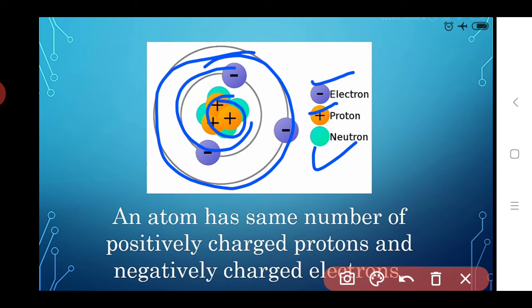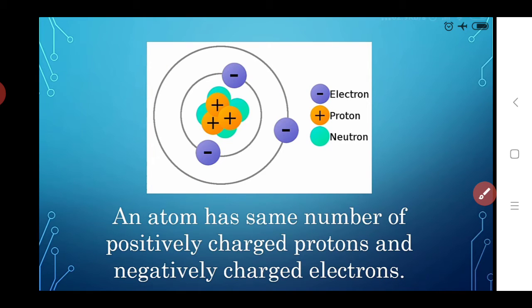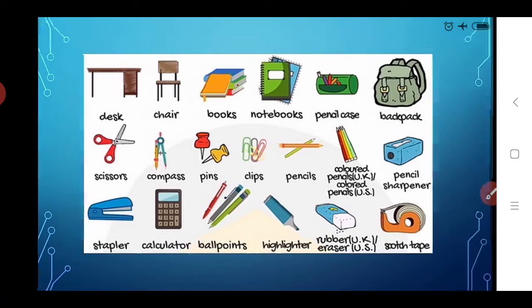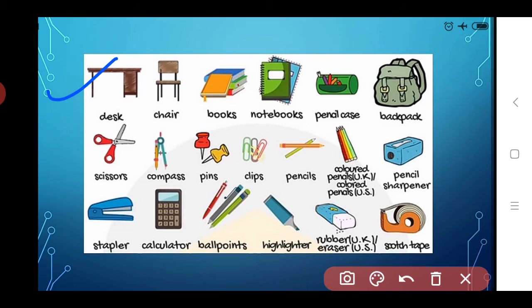An atom has the same number of positively charged protons and negatively charged electrons. If an atom contains three negatively charged electrons, it also contains three positive protons — equal in number. Due to this, we cannot feel the electric charge; the charges cancel one another. Objects around us are fully filled with charge particles because all objects are made up of atoms.